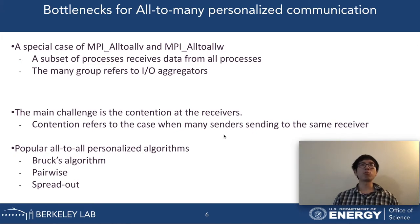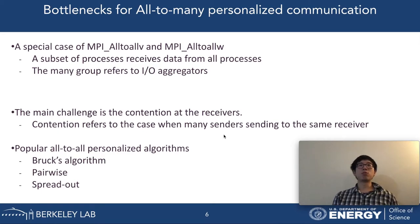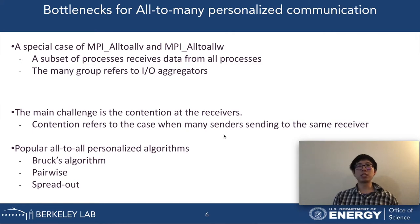The communication phase of two-phase I/O exhibits an all-to-many pattern. The 'many' group refers to the I/O aggregators, which is typically much smaller than the size of all processes. The all-to-many communication pattern corresponds to the V and W versions of the MPI_Alltoallw function. Contention is the main challenge of my work. We refer to contention as the case when a receiver has to concurrently receive metadata or data from a huge number of senders, which can dramatically reduce receiving performance compared with receiving from one sender after another. We list a few popular algorithms designed for all-to-all (O2O) communication patterns.